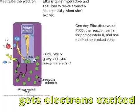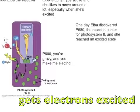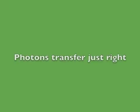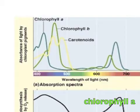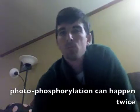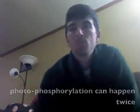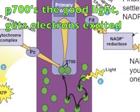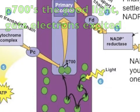P680 absorbs good light, electrons excited, photons transfer — just right — chlorophyll. Photophysical reactions at photosystem 2. P700 is a good light absorber, electrons excited.